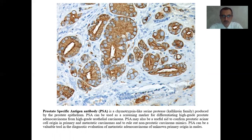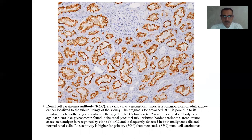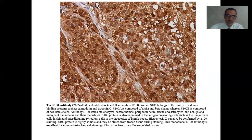Here you see the prostate-specific antigen antibody (PSA) used in prostate carcinoma. If the cells stain positive for this marker, we can confirm prostatic adenocarcinoma. Another example is the renal cell carcinoma antibody used in kidney tumors. S-100 antibody is identified as A and B subunits and belongs to the family of calcium binding proteins such as calmodulin and troponin C. This antibody stains melanocytes, schwannomas, peripheral neural tissue, astrocytes, and benign and malignant melanomas and their metastases.